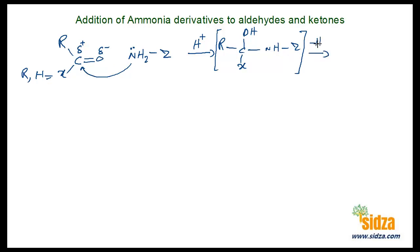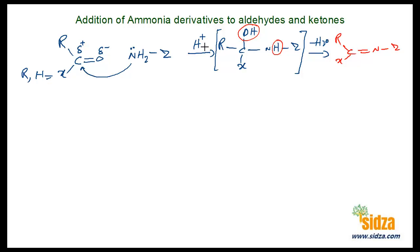After the addition product forms, there is loss of water — hydrogen from one position and OH from another — giving a C=N double bond with the group Z attached. This is the final product when aldehydes and ketones react with ammonia derivatives. This reaction occurs only in acidic medium; it cannot be carried out in neutral medium.